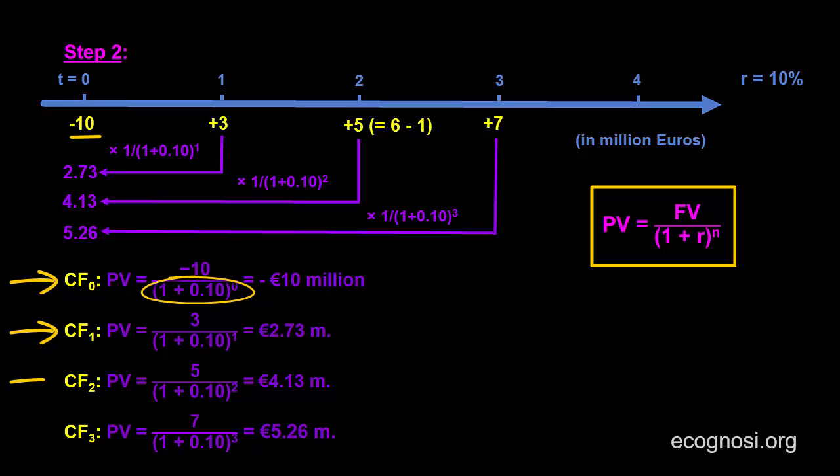Now in the cash flow 2 case, I wrote 5 over 1.1 squared, which equals 4.13 million euros. As we mentioned in the previous video, and you can see this on the timeline as well, this 5 is the outcome of netting two cash flows with opposing signs, one of positive 6 and another of negative 1. And we are allowed to do that since the two cash flows are at the same point in time.